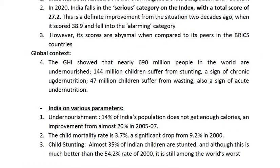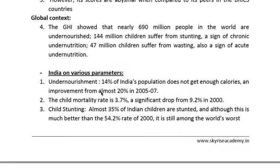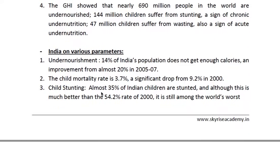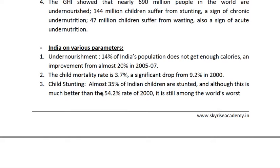Globally, the report shows that nearly 700 million people are undernourished, 144 million children suffer from stunting, and 47 million children suffer from wasting. For India's performance on various parameters, you can go through the specific percentages to mention in subjective papers.